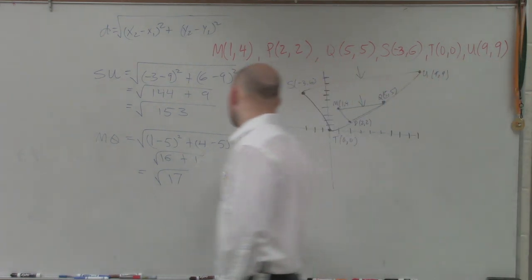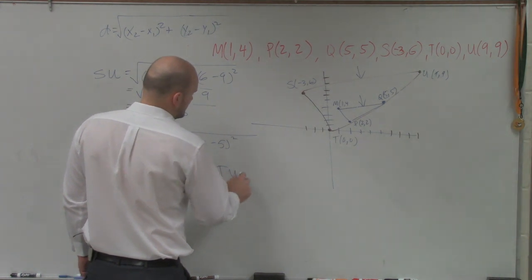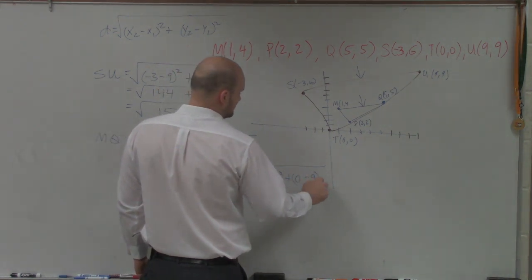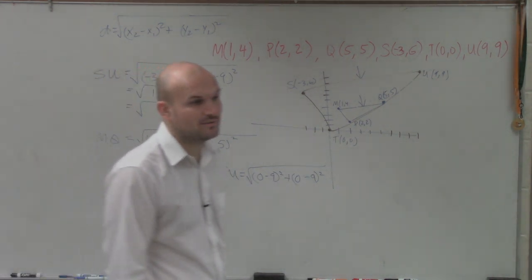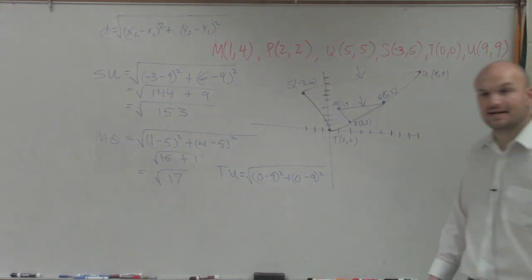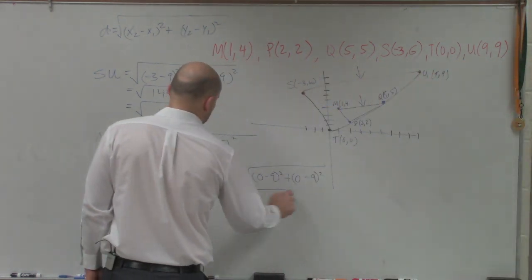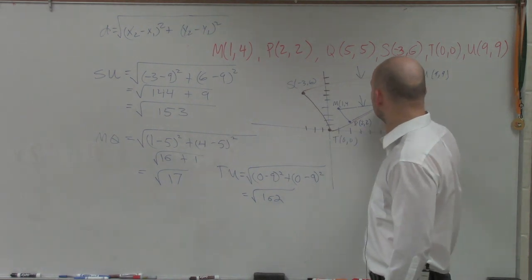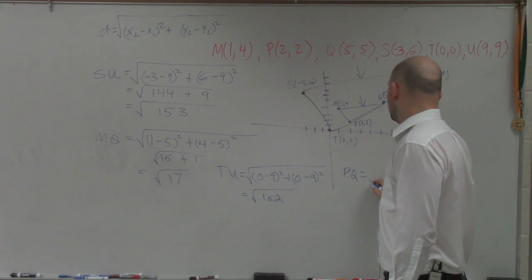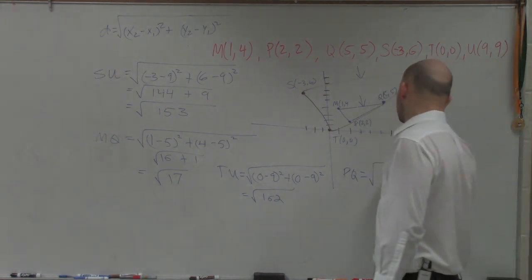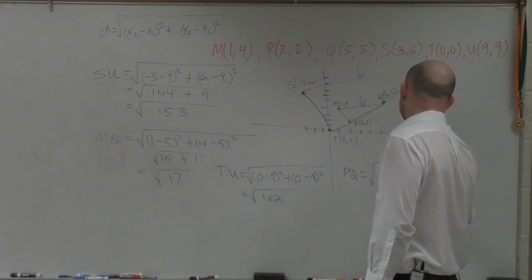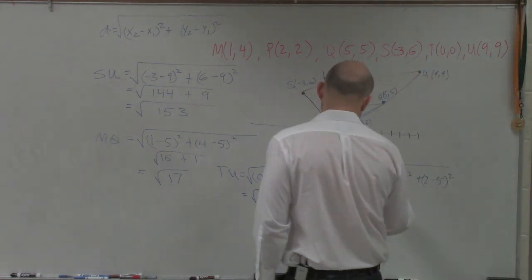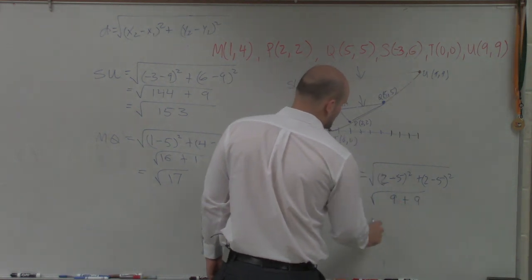So I'll do TU. TU equals the square root, again, subtracting. (0 minus 9) squared plus (0 minus 9) squared. Well, 0 minus 9 is -9. Negative 9 squared is 81. And we'll have 81 for the other one. So that's going to be 162. Then, over here, we have PQ. So PQ, again, it's the square root. Subtract the x-coordinate, subtract the y-coordinate. So I have (2 minus 5) squared plus (2 minus 5) squared. Well, 2 minus 5 is -3. Negative 3 squared is 9 plus 9, which is the square root of 18.